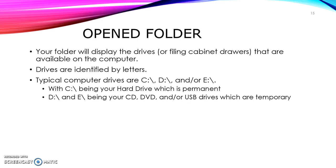Drives are identified by letters. A typical computer consists of a C drive, often times a D drive, and an E drive — with C always being your hard drive or permanent storage drive. Your D and E are usually your CD or DVD drive, and they are also now your USB drives. Remember, these drives are temporary.